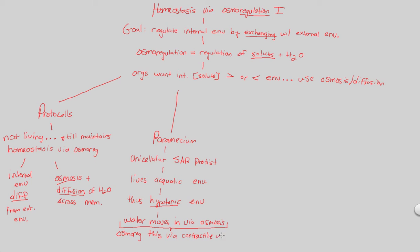Paramecium achieves osmoregulation via what's known as a contractile vacuole — a specific structure, illustrating the principle of structure and function. The contractile vacuole actively pumps H2O out of the paramecium because water is constantly rushing in from the external environment. This pumping out prevents the paramecium from bursting due to the influx of water — clearly a regulatory mechanism and a regulation of solutes and H2O.